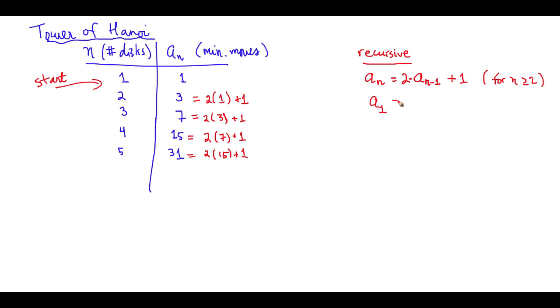And so our starting point for the tower of Hanoi must be at one. So a sub one is equal to one. So this is the recursive sequence that describes the minimum number of moves necessary to solve the tower of Hanoi with n number of disks.